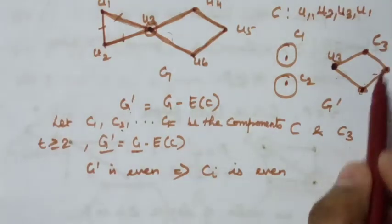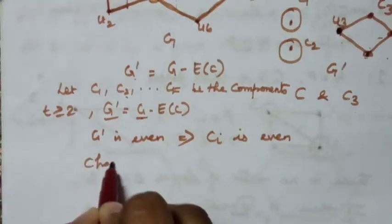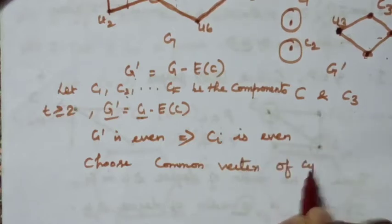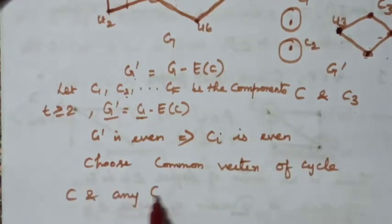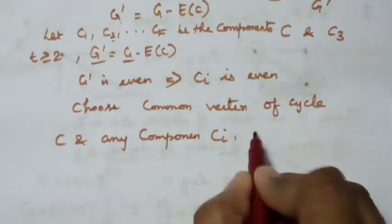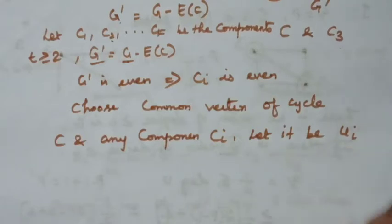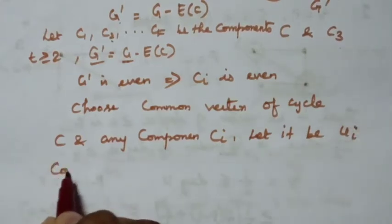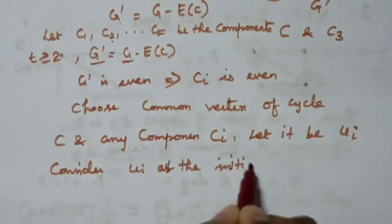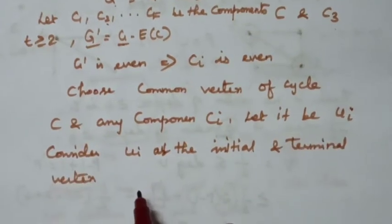Component C3 is even. We choose a common vertex between cycle C and any component CA. Let that common vertex be UI. Consider UI as the initial vertex and terminal vertex of the trail.